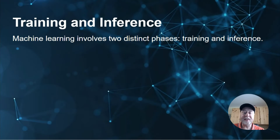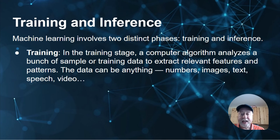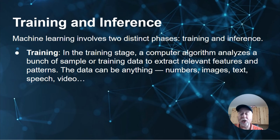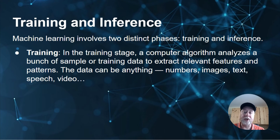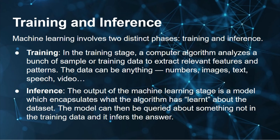Machine learning involves two distinct phases: training and inference. In the training stage, a computer algorithm analyzes a bunch of samples or training data to extract relevant features and patterns — the data can be anything: numbers, text, images, speech, video, and so on. The models look at the data, analyze it, and learn to understand what is one thing rather than another. Inference is the output stage where you take the trained model and query it about something not in the training data — for example, hot dog or not a hot dog.